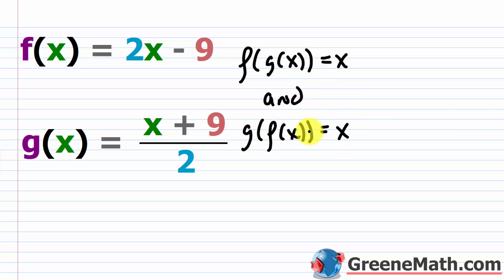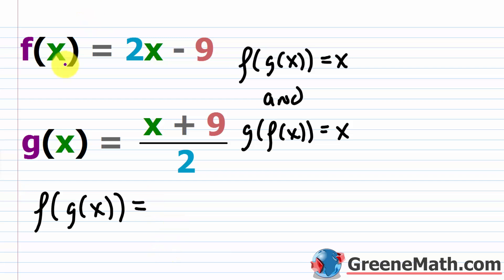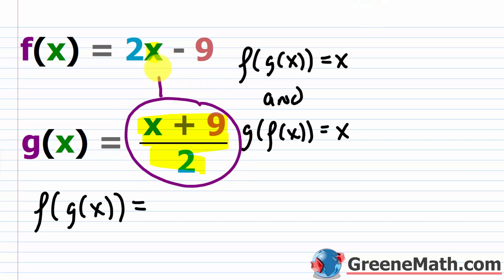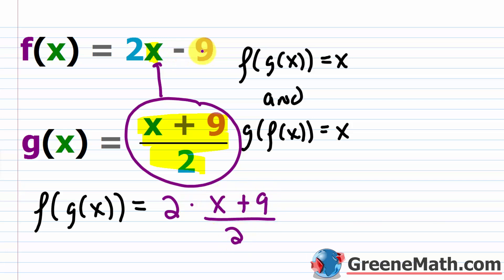So if we have f of g of x, what is this equal to? We take f of x, which is 2x minus 9, and everywhere there's an x, we're going to plug in g of x. So g of x is this guy right here. So what I'm going to do is plug this in for x there. So I would have 2 times the quantity x plus 9 over 2, and then I'm subtracting away 9.